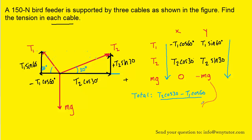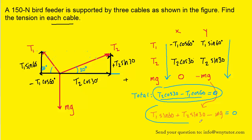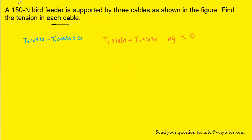Since the birdhouse is not accelerating, it's in equilibrium. That means we set the total x-component forces equal to zero and the total y-component forces equal to zero. We substitute 150 Newtons in for mg. Since we have two unknowns — T1 and T2 — appearing in both equations, we use algebraic substitution. We'll solve the simpler-looking equation for T2 by adding T1 cosine 60 to the other side, then dividing both sides by cosine 30.